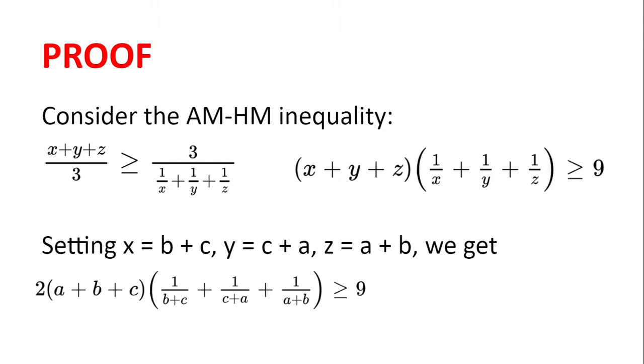Then we'll get 2 multiplied by a plus b plus c, multiplied by 1 over b plus c plus 1 over c plus a plus 1 over a plus b, is greater than or equal to 9.